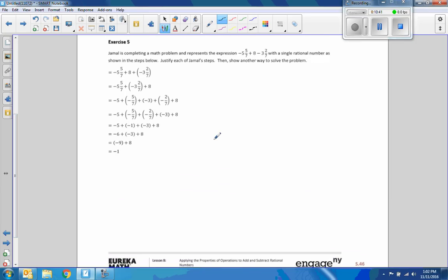Exercise 5. Jamal's completing a math problem representing the expression negative 5 and 5 sevenths plus 8 minus 3 and 2 sevenths. Write as a single rational number as shown in the steps below. Justify each of his steps. Then show another way to solve the problem.